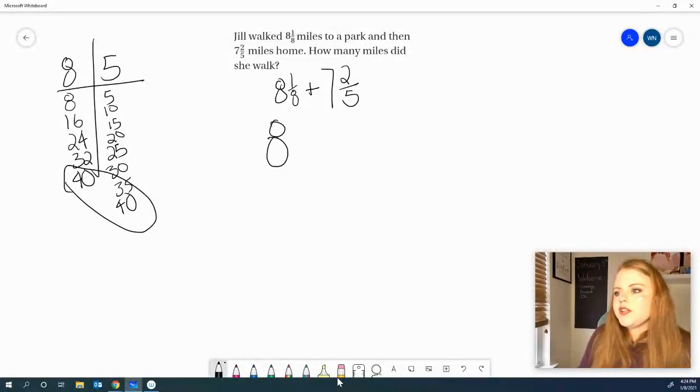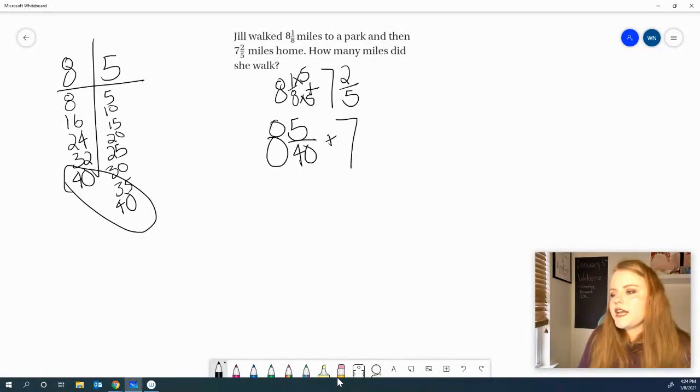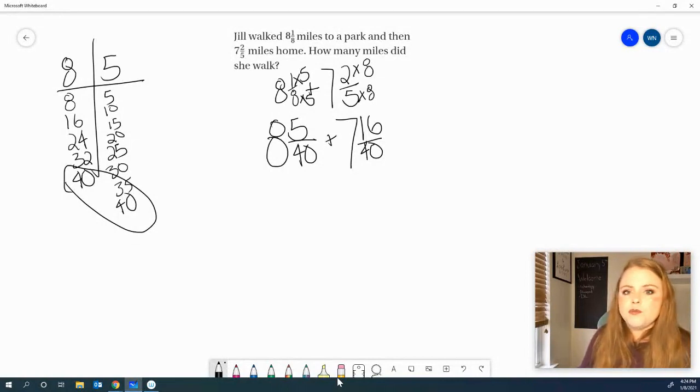So, let's make our equivalent fractions with our common denominator. To get to 40, I multiplied 8 times 5. So, I multiplied by 1 times 5 as well. 8 and 5 40ths. Now, we need to figure out our second fraction. To have 40 as our denominator, we need to multiply by 8. 5 times 8 is 40. 2 times 8 is 16. So, she walked 8 and 5 40ths of a mile to the park and 7 and 16 40ths home.